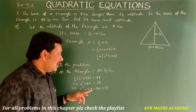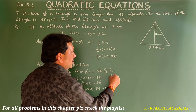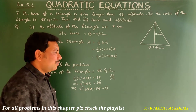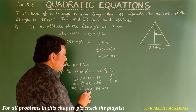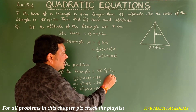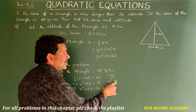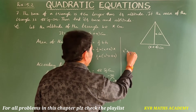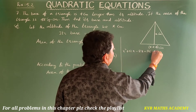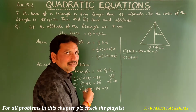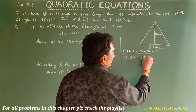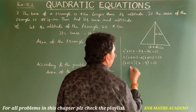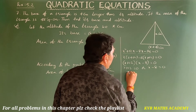Using the factorization method, for 96 we find factors to get plus 4: 12 and 8 work, because 12 minus 8 is plus 4 and 12 times minus 8 is minus 96. So: x squared plus 12x minus 8x minus 96 = 0. Taking x as common: x(x plus 12) minus 8(x plus 12) = 0, giving (x plus 12)(x minus 8) = 0.